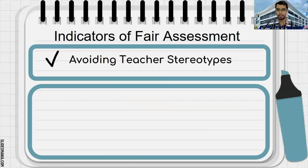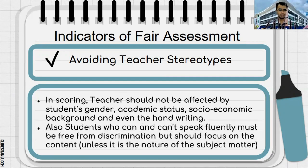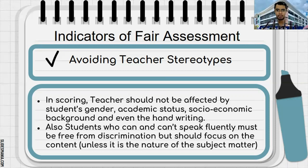Another indicator of fair assessment is avoiding teacher stereotypes. In scoring, teachers should not be affected by students' gender, academic status, socioeconomic background, or even handwriting when checking essays — handwriting should not matter; we should focus on the content. Students who can and cannot speak fluently must be free from discrimination, and we should focus on content unless speaking is the nature of the subject matter. We should not favor students because of pleasing personality or because they are our relatives. We should treat them fairly.